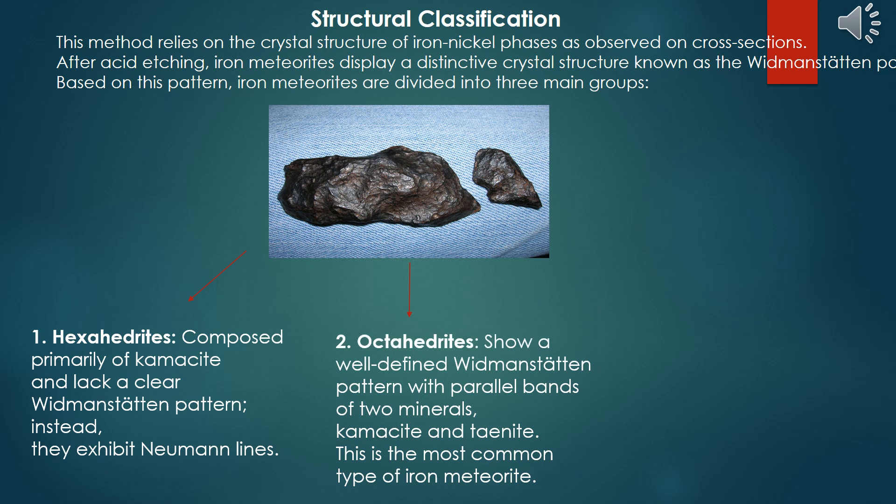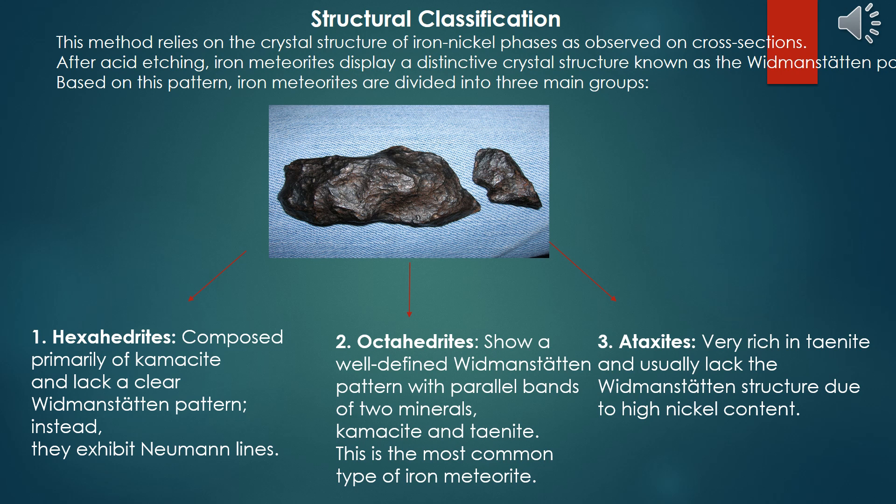2. Octahedrites: show a well-defined Widmannstätten pattern with parallel bands of two minerals, kamacite and taenite. This is the most common type of iron meteorite. 3. Ataxites: very rich in taenite and usually lack the Widmannstätten structure due to high nickel content.